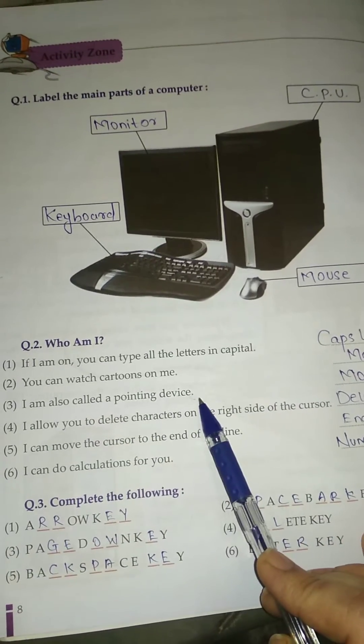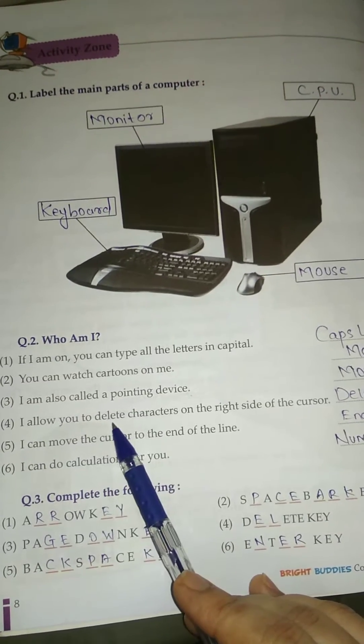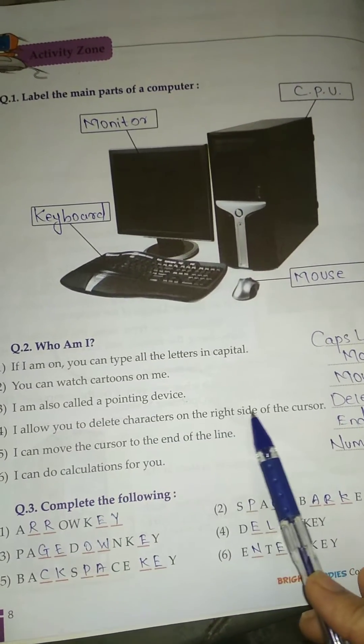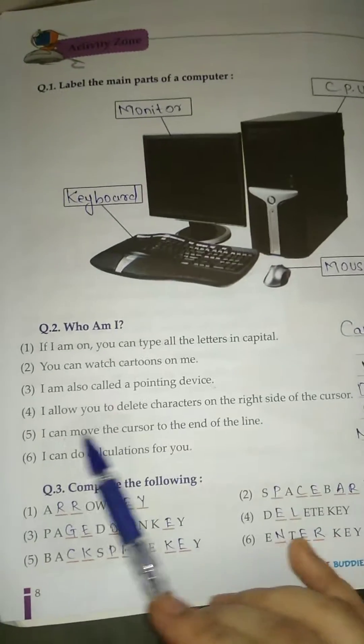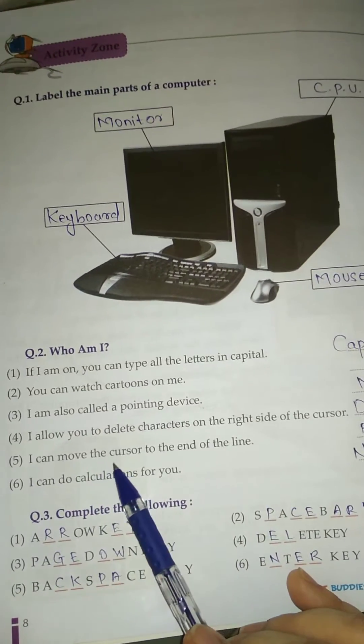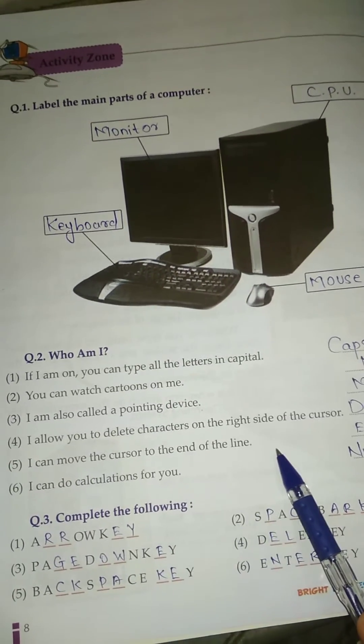Number 3, I am also called a pointing device - Mouse. Number 4, I allow you to delete characters on the right side of the cursor - Delete Key. Number 5, I can move the cursor to the end of the line - End Key.